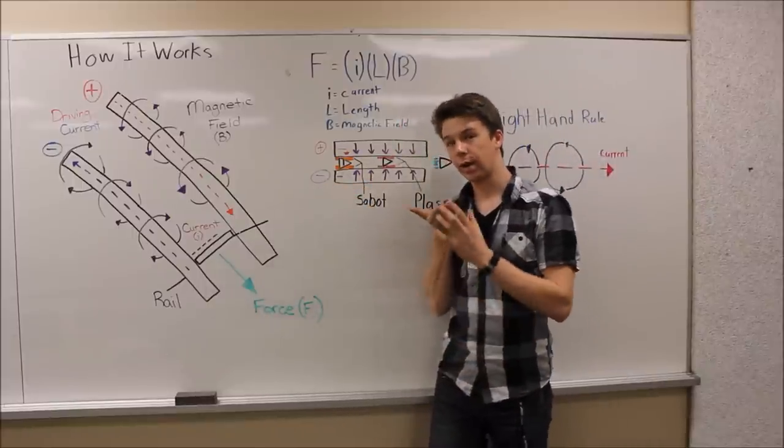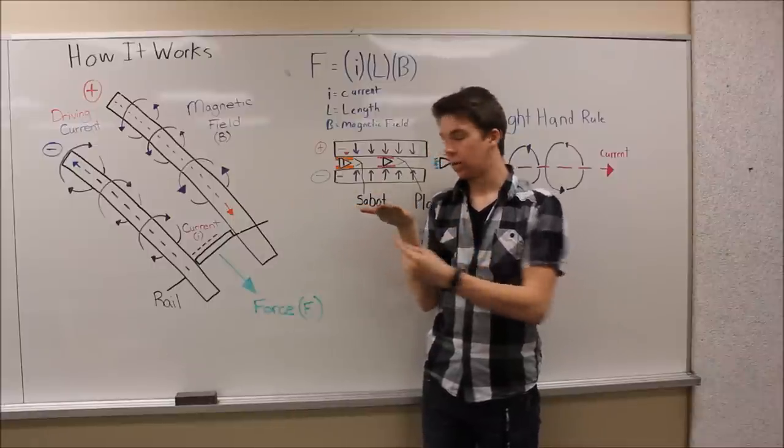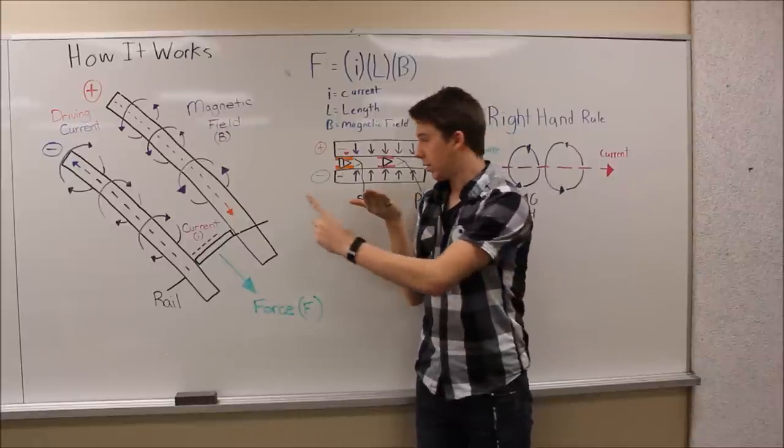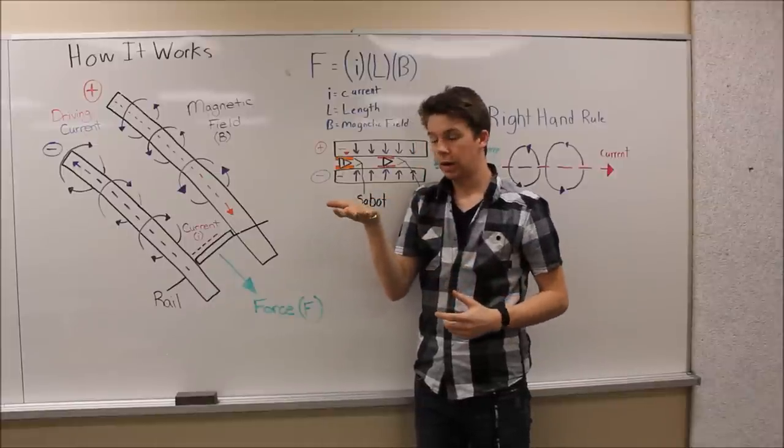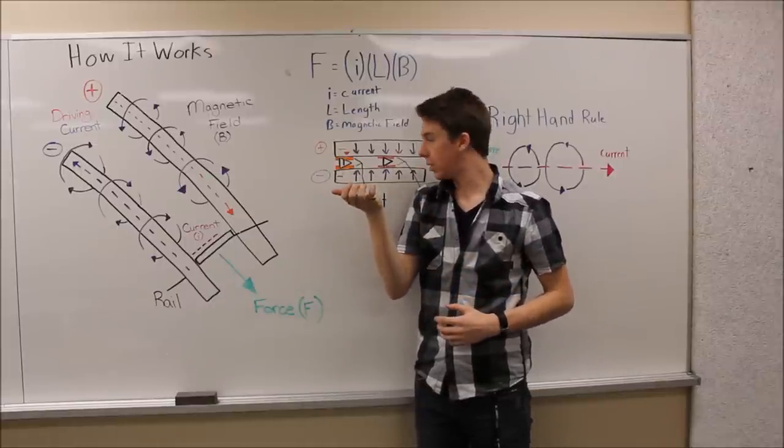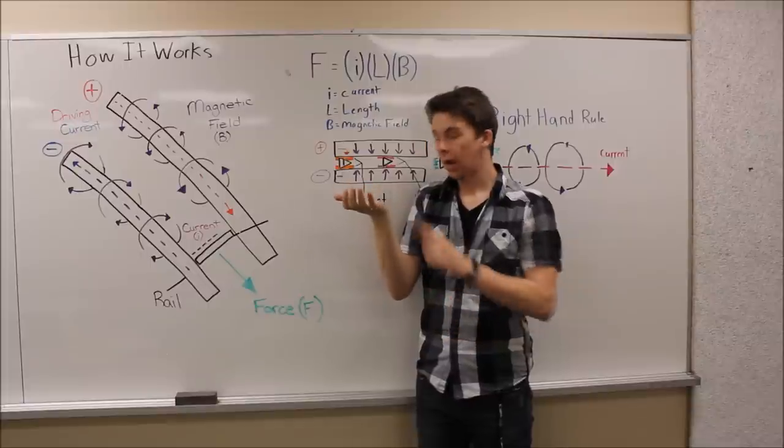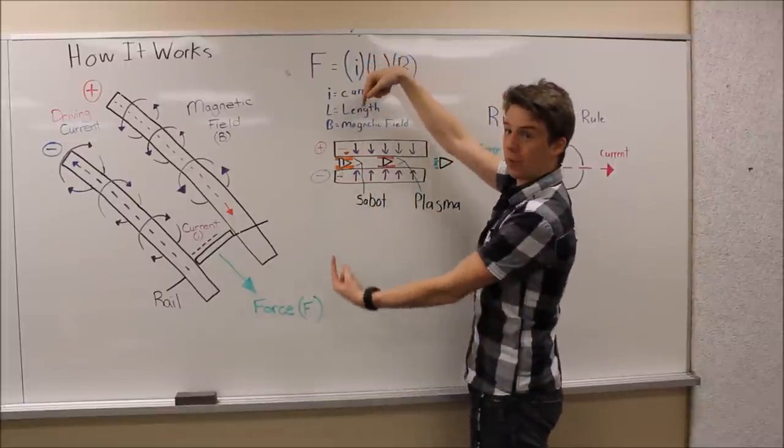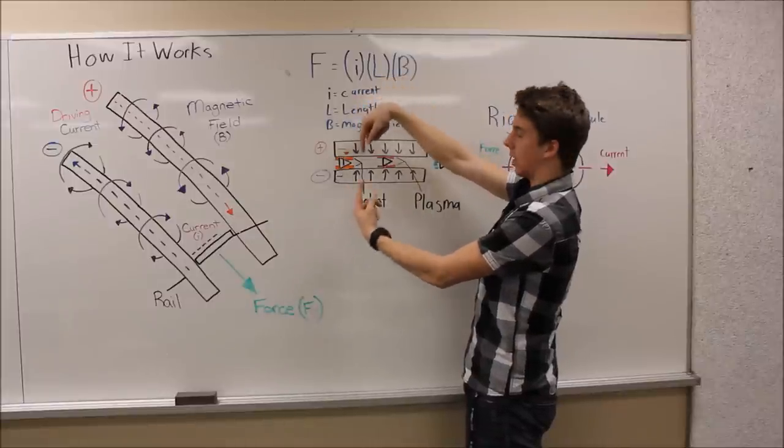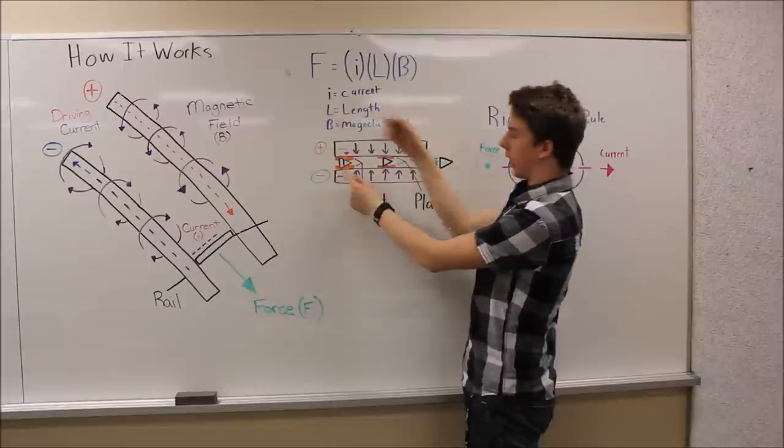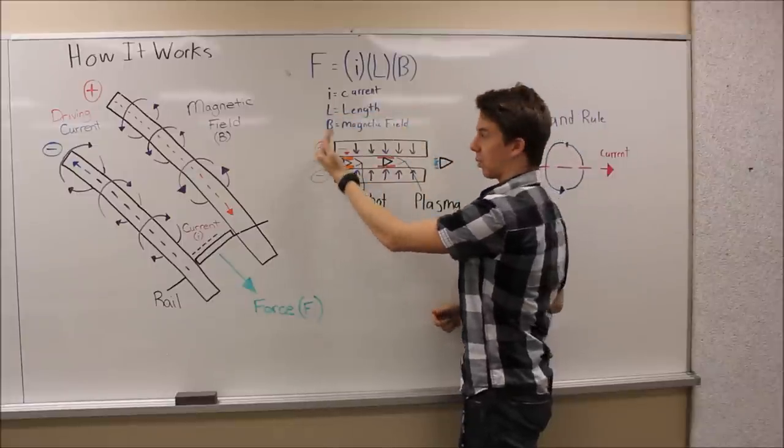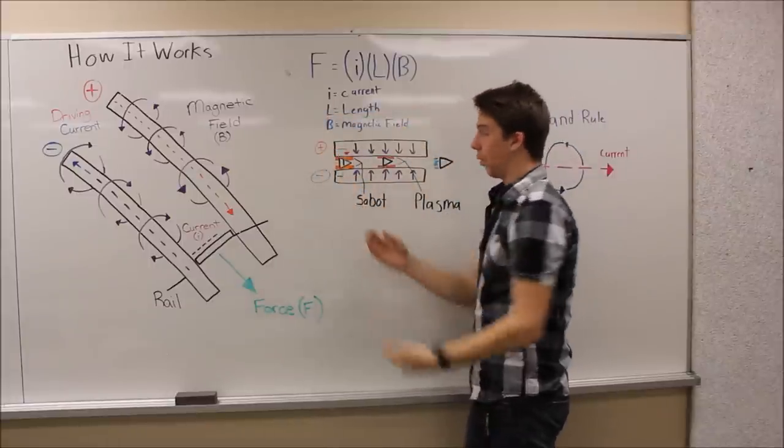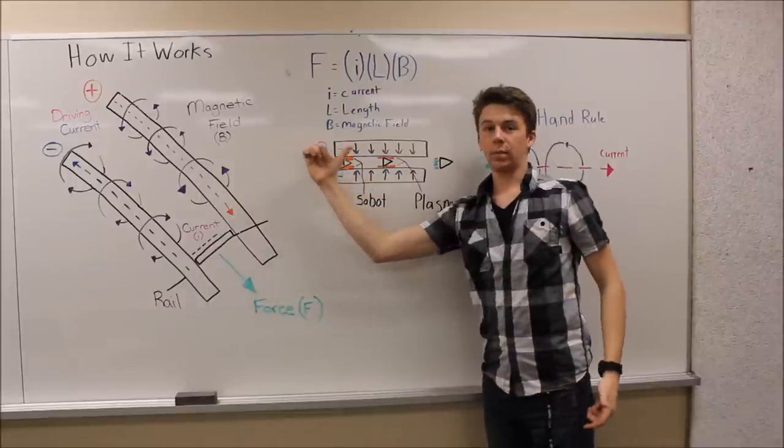We've got our current going out. So we use our thumb, pointed in the direction of current, going out. Our fingers coil in the direction of the magnetic field. And our palm is now facing up, which is again inward. So we have two forces sandwiching our projectile. They both want to get it out of the way. It can no longer go backwards because it's at the end of our gun. Where else can it go? Down the barrel.